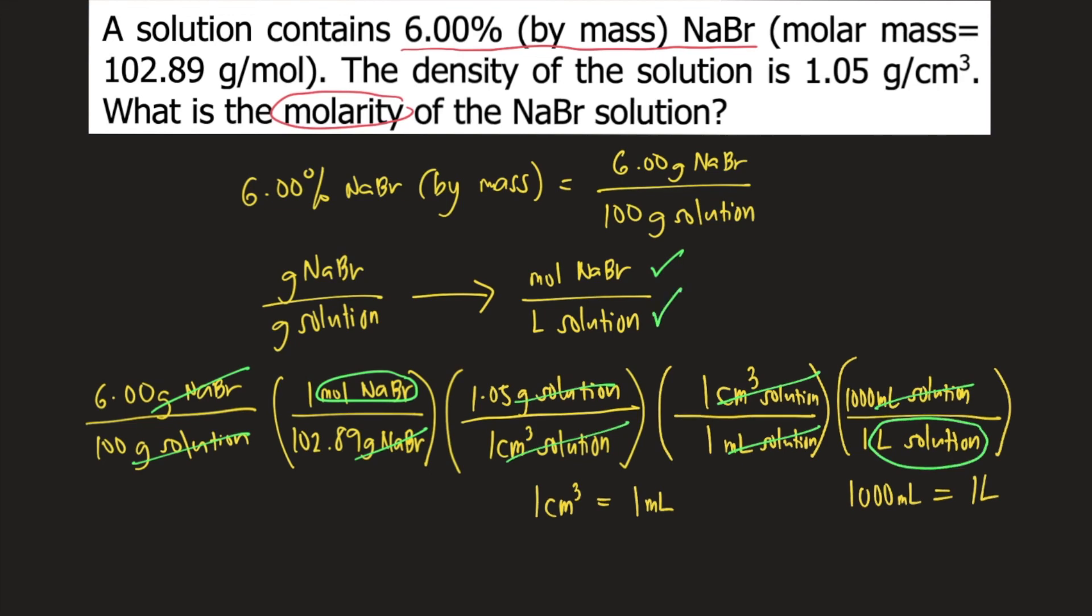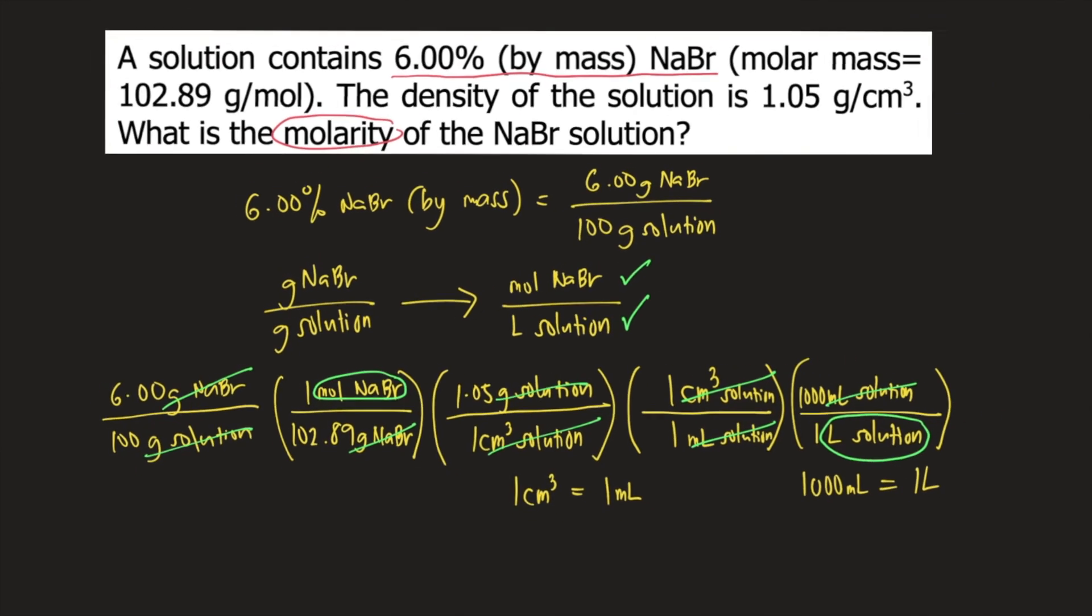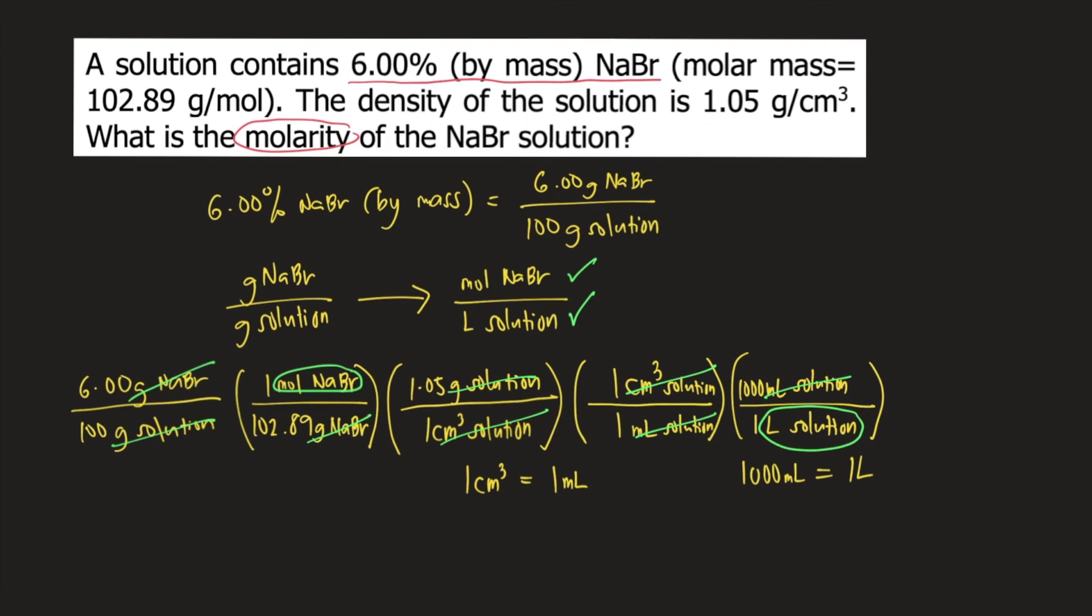So now that we got our units right, moles on top and liter at the bottom, we can now compute for the molarity of the solution. If you will compute for the whole thing, this is equal to 0.612 and the units would be moles per liter or 0.612 molar. And this is the answer to the question.